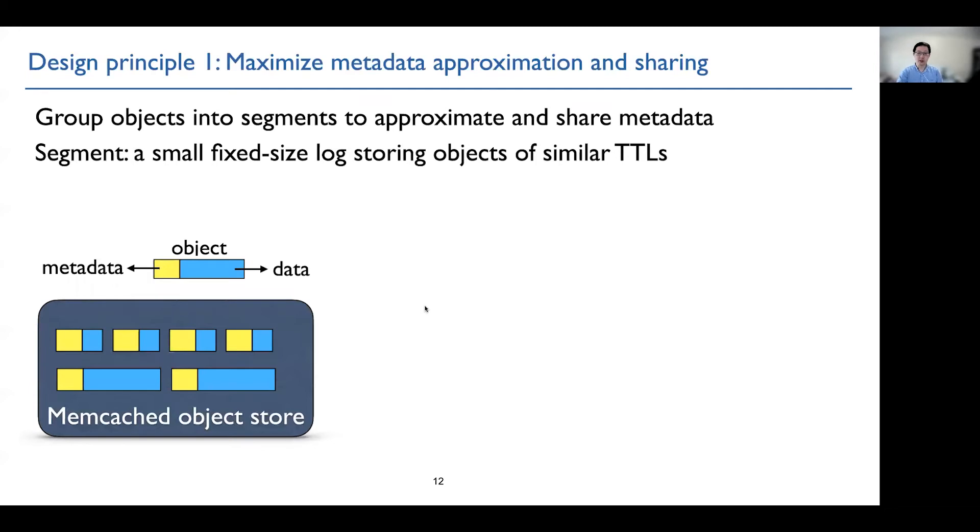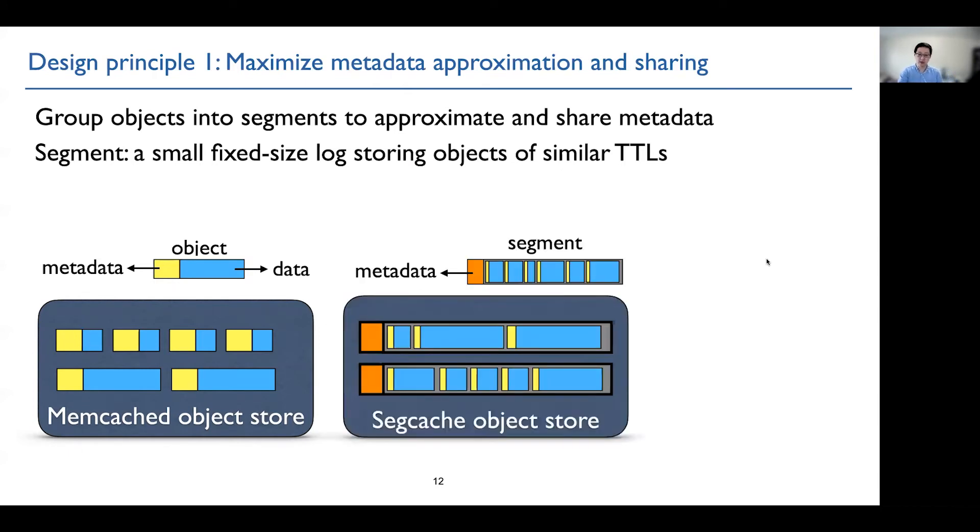So this is a memcached object store, where you have the object metadata stored together with the object data. And sometimes the object metadata can be larger than the object data. Here is Segcache object store. We lift most object metadata into this segment metadata, and this metadata is shared by all the objects in the segment.